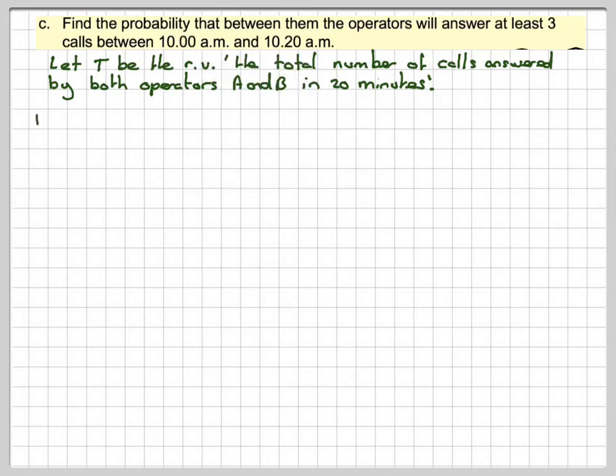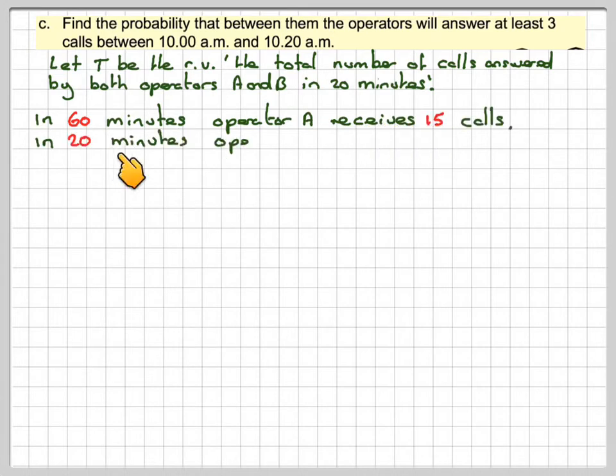In 60 minutes, operator A receives 15 calls. Therefore in 20 minutes it receives 15 divided by 3 calls, which is 5 calls.